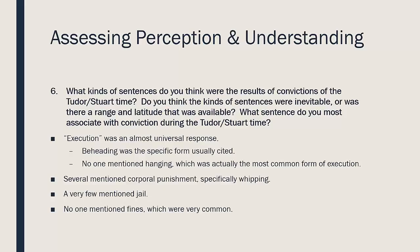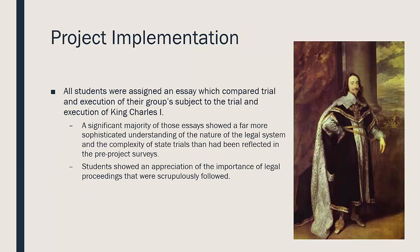The last question I asked was about sentences: were the kinds of sentences people received automatic, or was there a range? They seemed to think that execution was always the outcome of a guilty verdict, and specifically that execution meant beheading. Nobody mentioned hanging, which is actually numerically the most common form of execution at the time — nobody even thought of that. A few mentioned whipping or other corporal punishment. A couple mentioned jail, but that was not typical. Nobody mentioned fines, which was actually a very high-frequency outcome of trials.